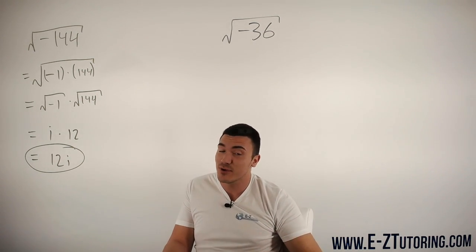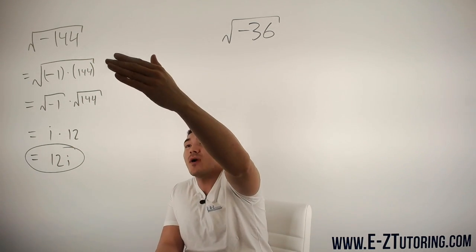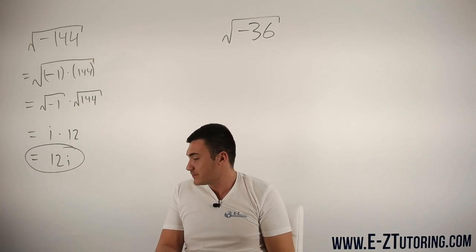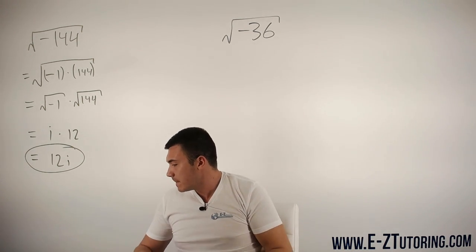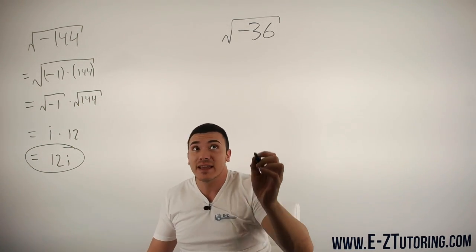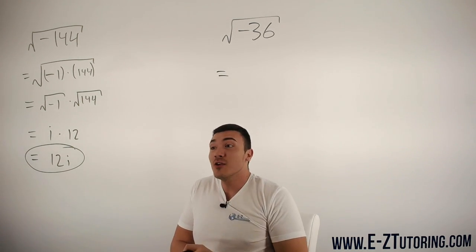After you get used to it with some practice doing these steps, let's try the other one. We have the square root of negative 36. Let's go ahead and do that shortcut.